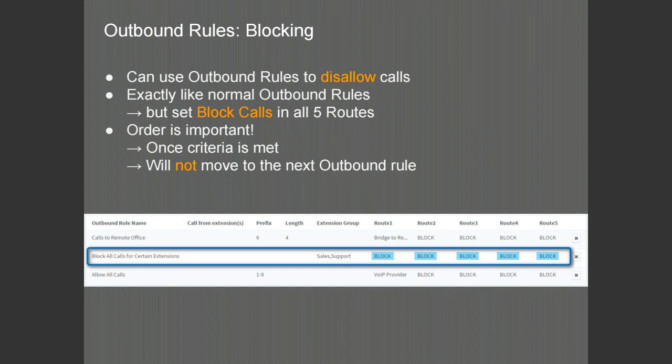In addition to configuring outbound rules to allow calls and choose which trunk a call goes out from, you can also use the outbound rules to block calls to a particular destination or from specific extensions. The configuration is the same as any other outbound rule, but the five routes are now set to block the calls. Ordering of the rules is very important — once the criteria have been met, the PBX will not move on to the next rule to find a better match.